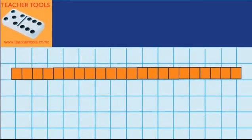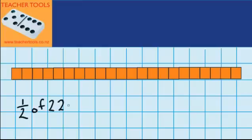Over here you can see I've got 22 blocks and I want to share those 22 blocks between two people, so I'm trying to work out what half of these 22 would be. I can record that like this: what is half of 22? I'm not quite sure what half of 22 would be, so I'm going to see if I can use my repeated addition facts to help me.